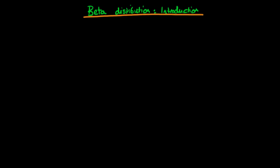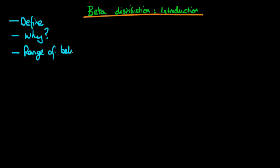In this video, I want to provide an introduction to the beta distribution. What we're going to do is talk about, first of all, defining what is meant by the beta distribution. Then importantly, we're going to talk about why we might want to use the beta distribution as a way of specifying prior knowledge about a situation, and in what circumstances we would want to do that. And finally, we're going to talk about the range of beliefs which we can specify by varying the parameters of our beta distribution.